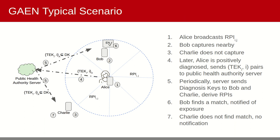Here's a look at the typical GAEN scenario. At step 1, Alice broadcasts her RPIs. Nearby and within BLE range, at step 2, Bob captures and stores them. Out of range, at step 3, Charlie does not. Unfortunately, Alice is later diagnosed positive and elects to send her anonymous TEKs to the public health authority server. These keys are combined with other positive keys and periodically distributed to all subscribers, including Bob and Charlie. Both Bob and Charlie's phone will derive RPIs from the TEKs, but only Bob's will determine a match with an RPI captured from Alice, prompting a notification. Charlie will not match because she never captured Alice's RPI to begin with, not ever being within BLE range.